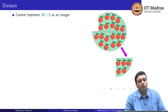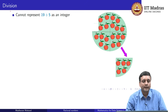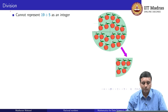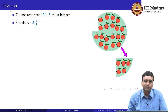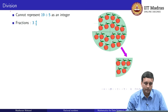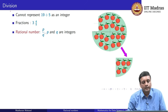We said that we cannot represent 19 divided by 5 as an integer because we cannot find a number k such that 5 times k is 19. The way we deal with this is to represent this quantity as a fraction. We say that 19 divided by 5 is 3 and 4 fifths, and this number is an example of a rational number.